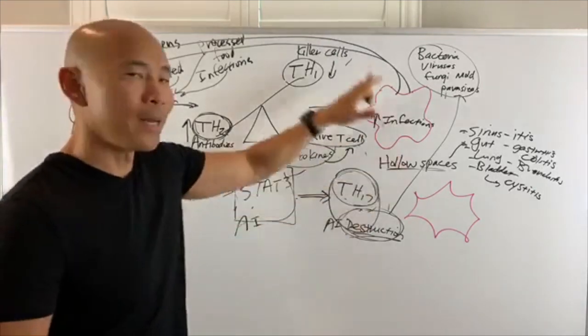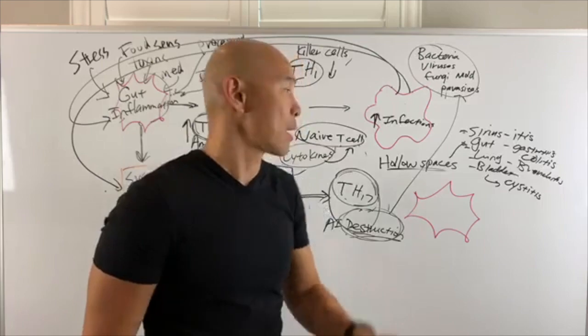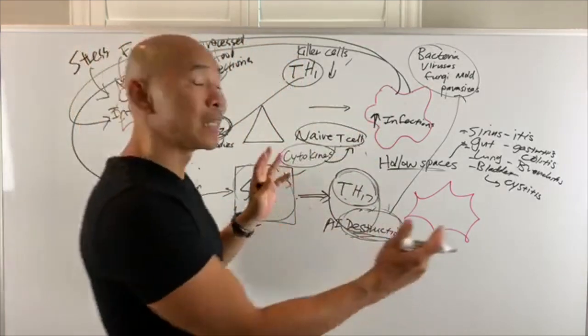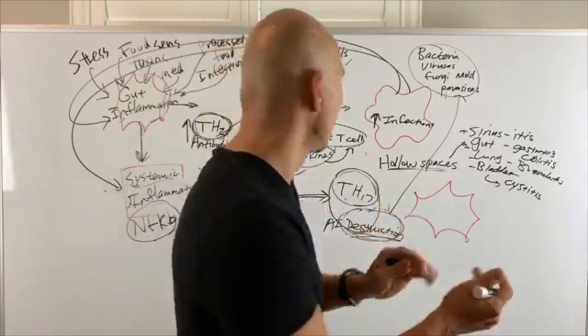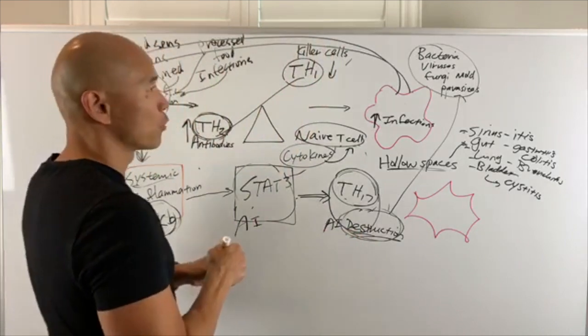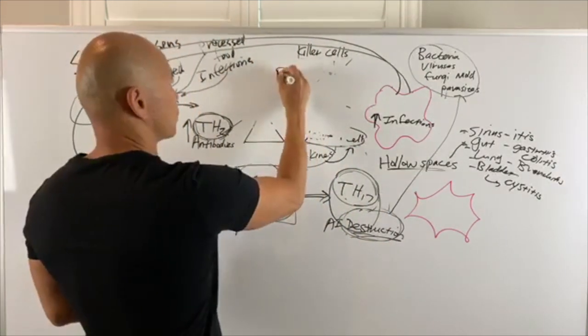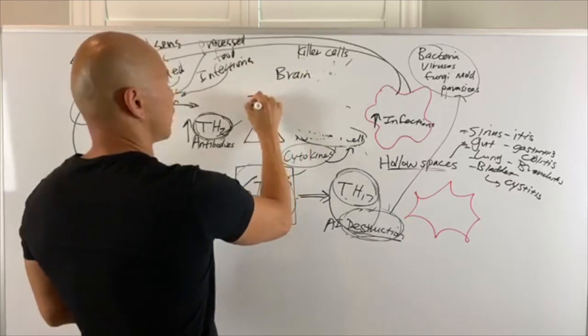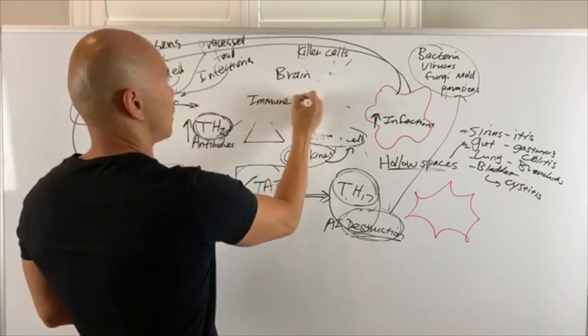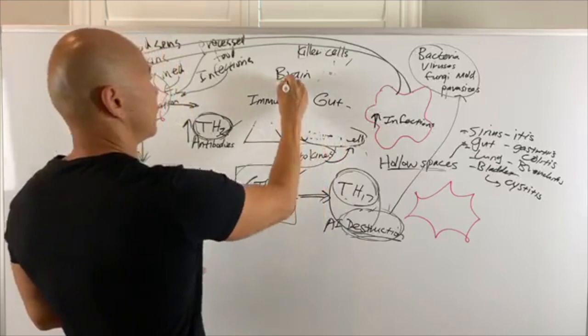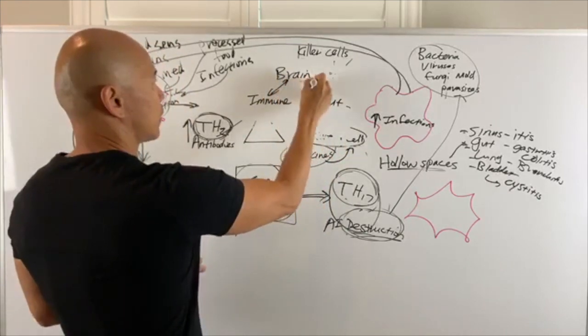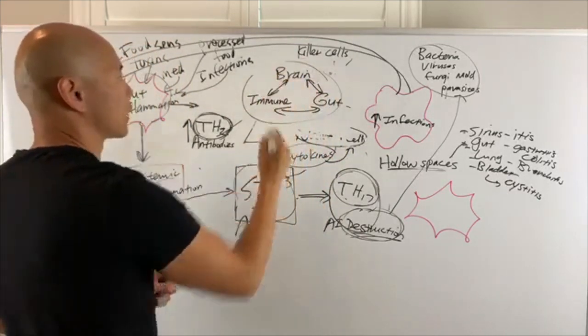So this becomes a big puzzle that we need to solve one whiteboard at a time. And I'm teaching different pieces of it, but I'm really getting close to tying this all together. Remember, a lot of this has to do with what we call the brain-immune-gut axis. So here's brain, immune, and gut. So they work interconnected, like in a triangle.